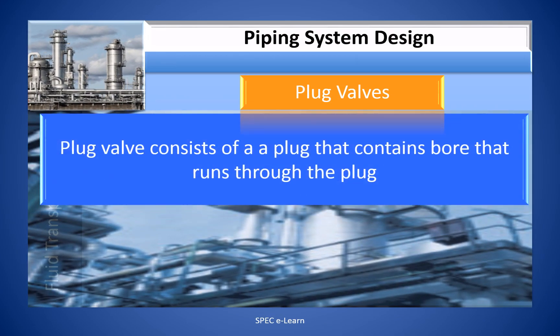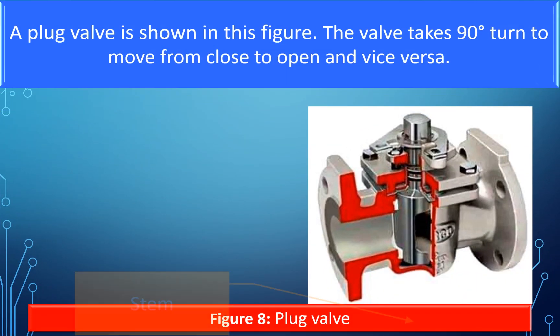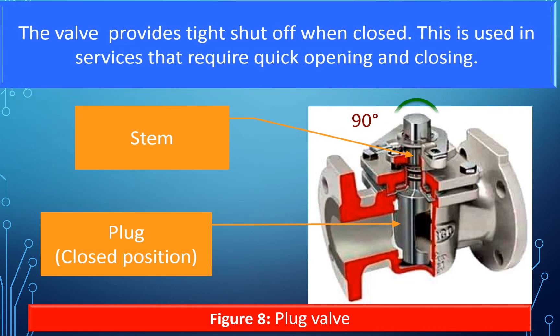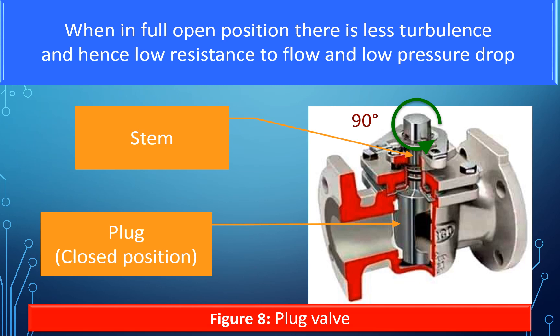The plug valve consists of a plug that contains a bore running through it. The bore is conical or cylindrical, and the bore size is the same as the pipe diameter, hence it allows full flow. The valve takes a 90-degree turn to move from closed to open and vice versa. It provides tight shut-off when closed and is used in services that require quick opening and closing. When in the full open position, there is less turbulence, resulting in low resistance to flow and low pressure drop.